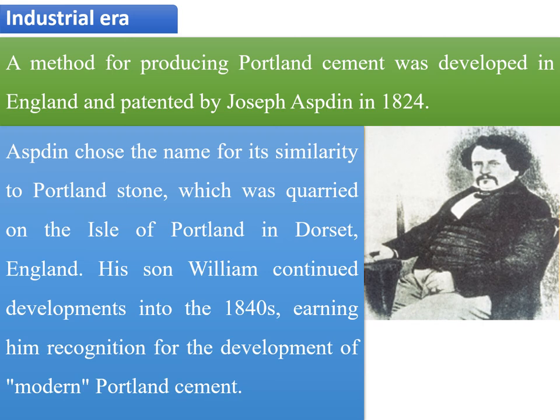During the industrial era, the method of producing Portland cement was developed in England and patented by Joseph Aspdin in 1824. Aspdin chose the name for its similarity to Portland stone, which was quarried on the Isle of Portland in Dorset, England. His son William continued developments into the 1840s, earning recognition for the development of modern Portland cement.